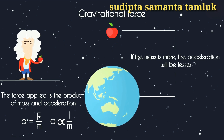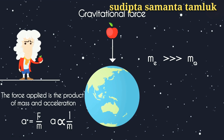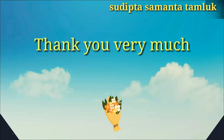If the mass is more, the acceleration will be lesser. As the mass of the earth is much, much, much more than the mass of the apple, it is the apple that accelerates towards the earth and not the other way around. Hope that makes it clear!